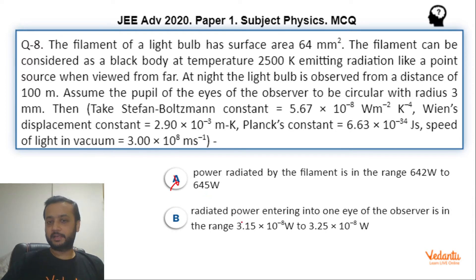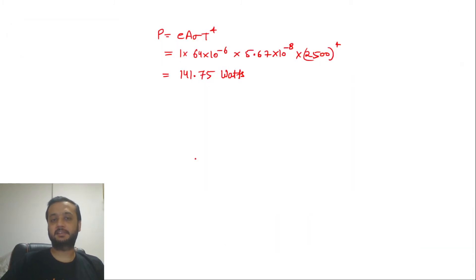Now radiated power entering into one eye of the observer. So at 100 meters distance, if you see, let's say this is the bulb, so this bulb filament, assume it radiates in a spherical region.